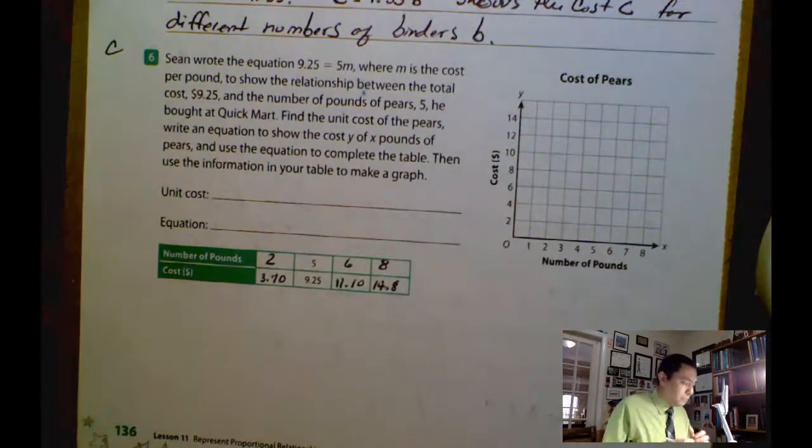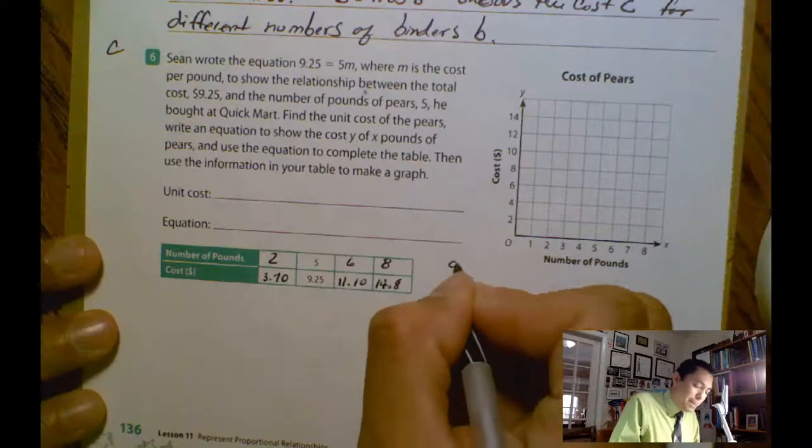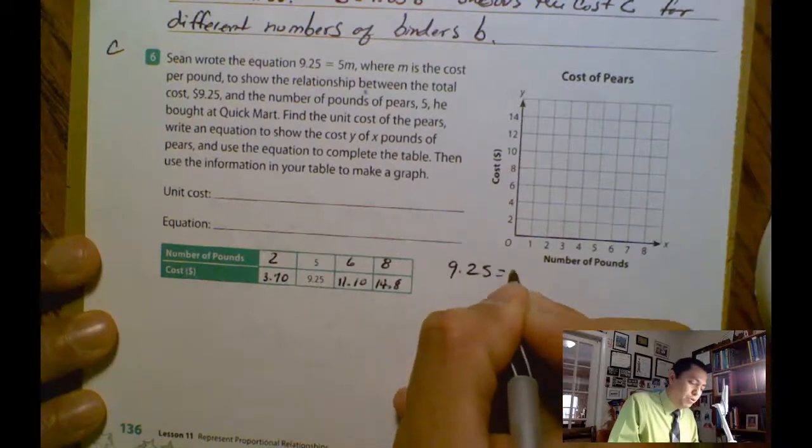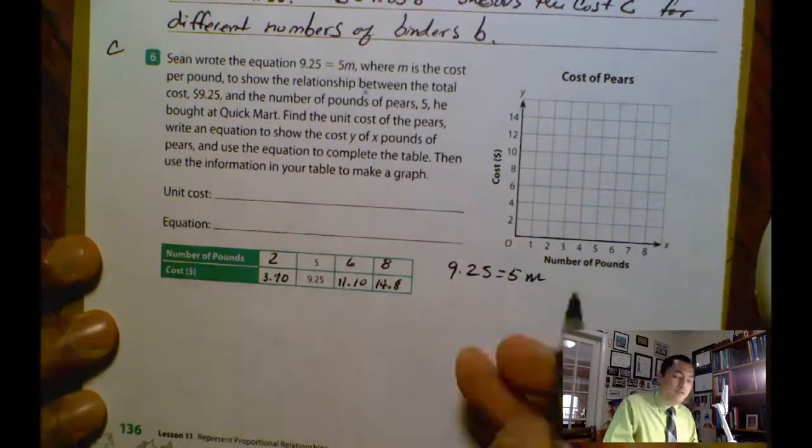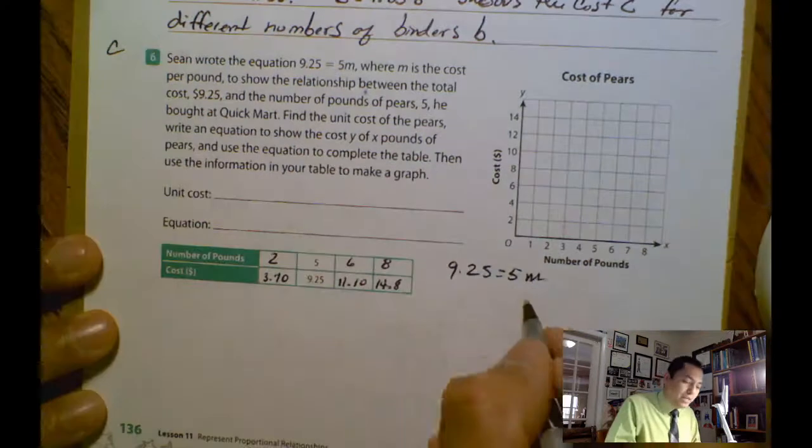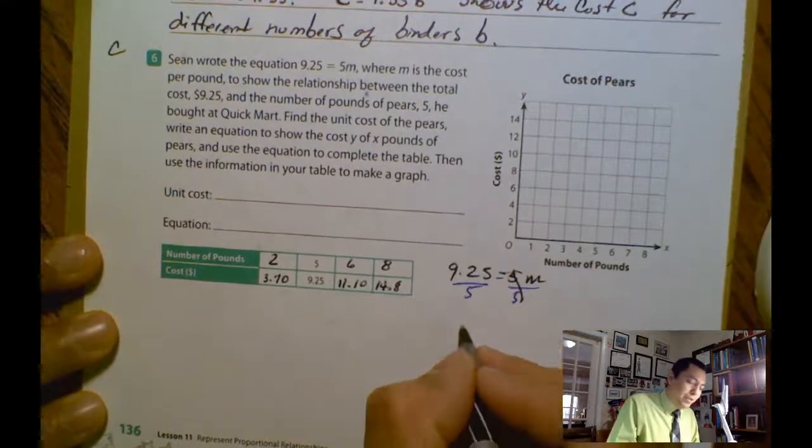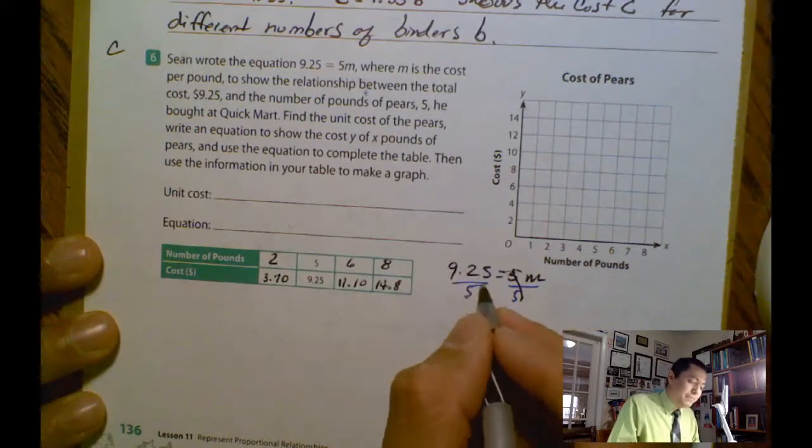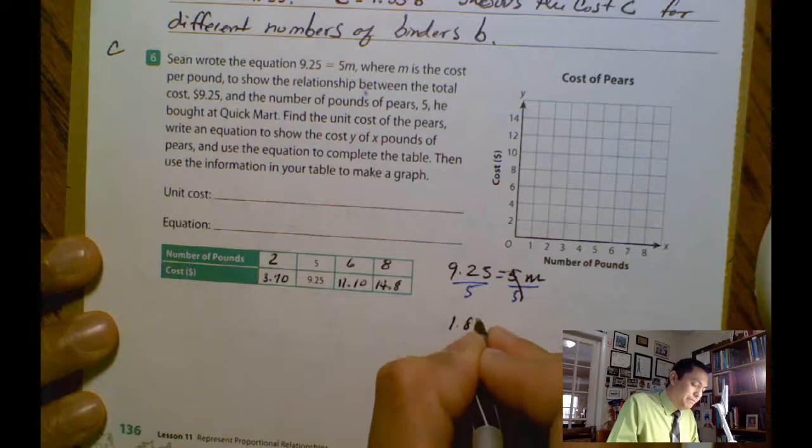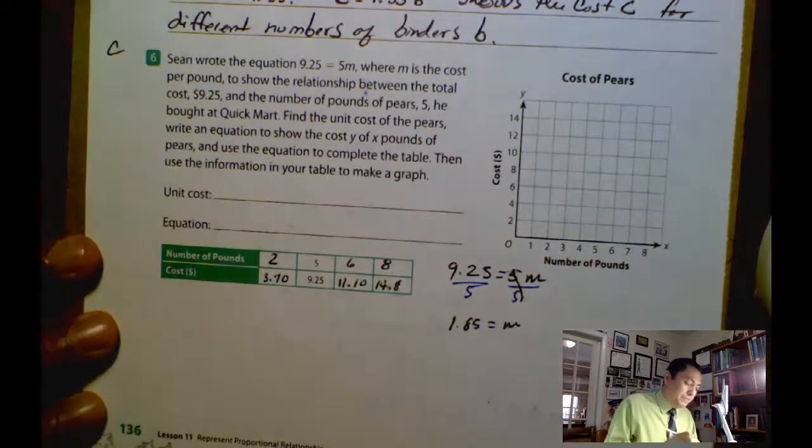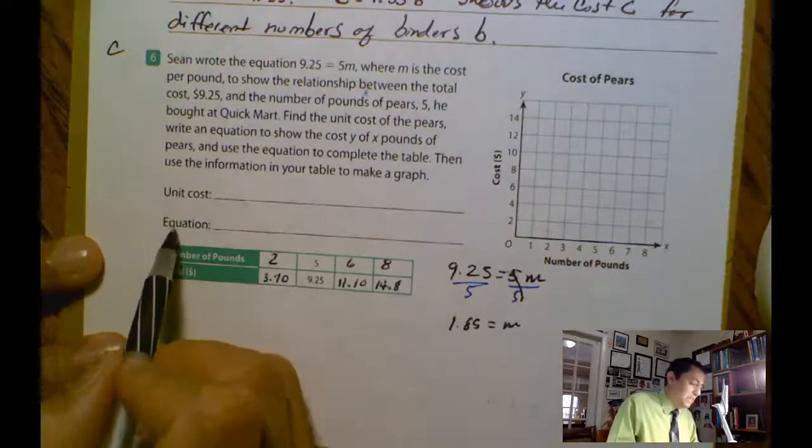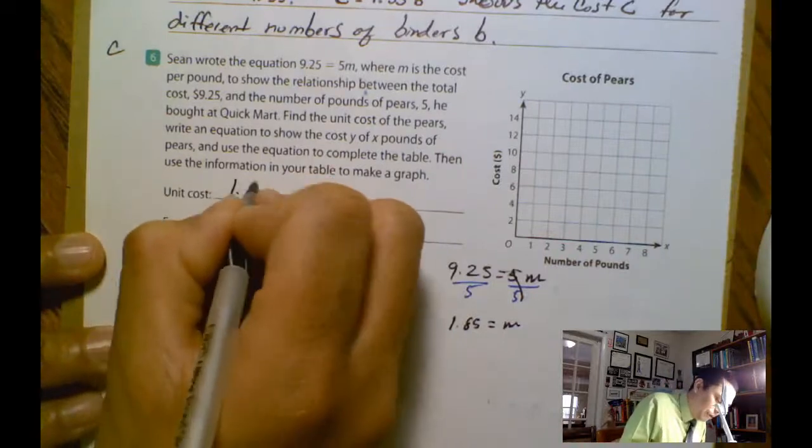So in this case, what is the unit cost? The unit cost, if you have 9.25 equals 5M, you just need to solve for M. It's an equation. So we divide both sides by 5, as we learned before. So you have 9.25 divided by 5 is 1.85 equals M. So in this case, this one is 1.85.